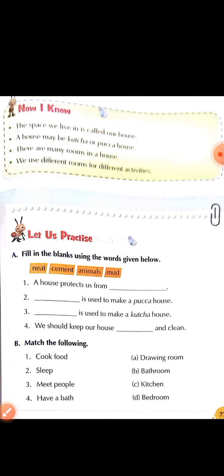Now let us practice. Fill in the blanks using the words given below. First: a house protects us from blank — a house protects us from animals. Animals se hume protect karta hai humara house. Next: blank is used to make a pakka house. Next: we should keep our house neat and clean — hamare ghar ko neat and clean rakhna chahiye.